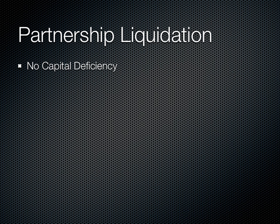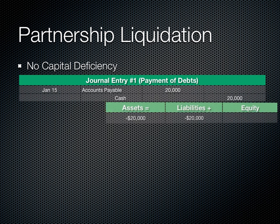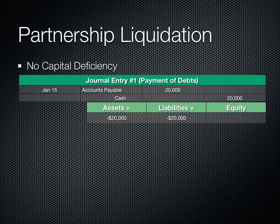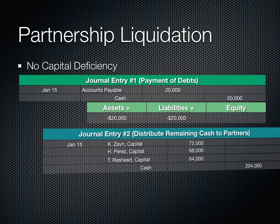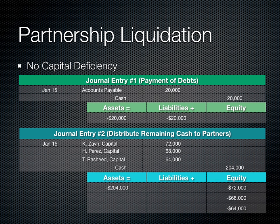In the event that there is no capital deficiency, all three partners will walk away with cash in their pockets. Journal entry one clears all outstanding debts of the business. Journal entry two distributes the remaining cash to the partners. Also included is the impact on the balance sheet.